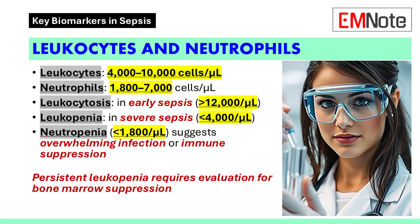Leukocytosis, defined as levels exceeding 12,000 cells per microliter, results from cortisol-mediated demargination and granulocyte colony-stimulating factor release. Leukopenia, defined as levels below 4,000 cells per microliter, may occur during severe infections. Neutropenia, defined as levels below 1,800 cells per microliter, indicates impaired bone marrow function. Elevated immature neutrophils suggest an early infection response.